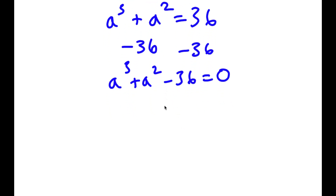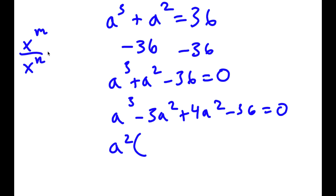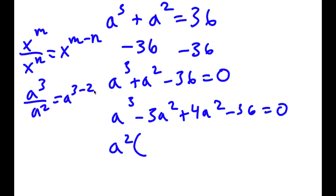What I'm going to do is rewrite a squared as negative 3a squared plus 4a squared, so we can factor in parts. From a to the power of 3 minus 3a squared, I can factor out a squared. Using the rule x to the power of m over x to the power of n equals x to the power of m minus n, a cubed over a squared equals a to the power of 1. So I have a squared times a minus 3.